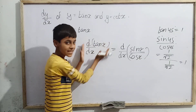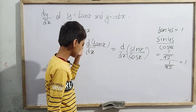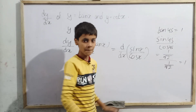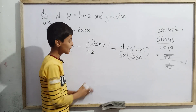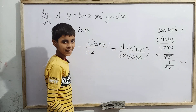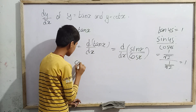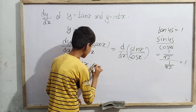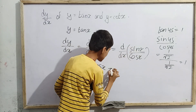If we differentiate sin x by cos x in place of tan x, the same answer will come. So dy/dx of tan x equals dy/dx of sin x by cos x. Let us differentiate sin x by cos x. Using the quotient rule, this equals cos x times the differentiation of sin x, which is cos x, minus...